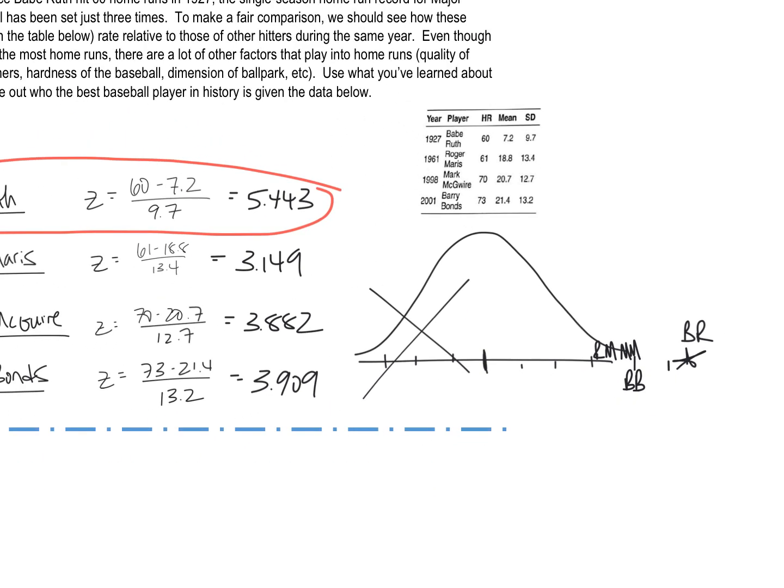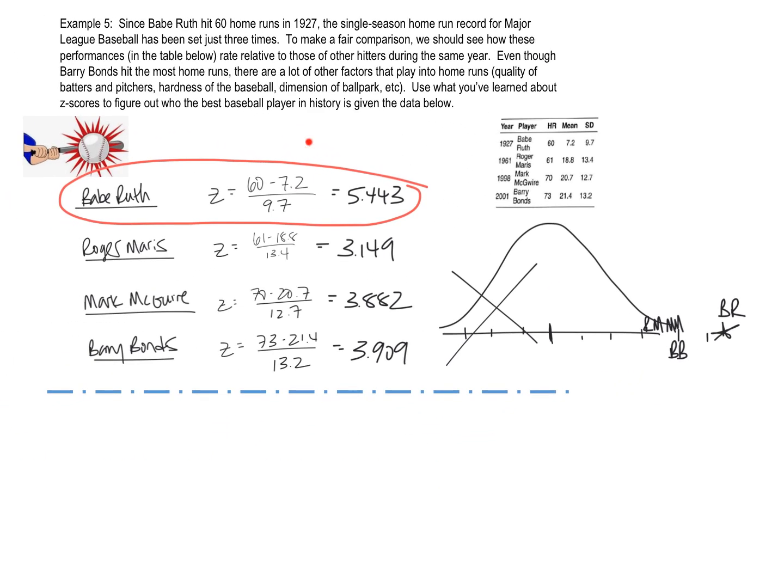What I did is I standardized all of their home runs with their means and their standard deviations from their season. That's called standardizing. And that's how I got these Z-scores. And all of these Z-scores represent number of standard deviations above average. They're all positive because they're above. If any of them were negative, they would be below average.